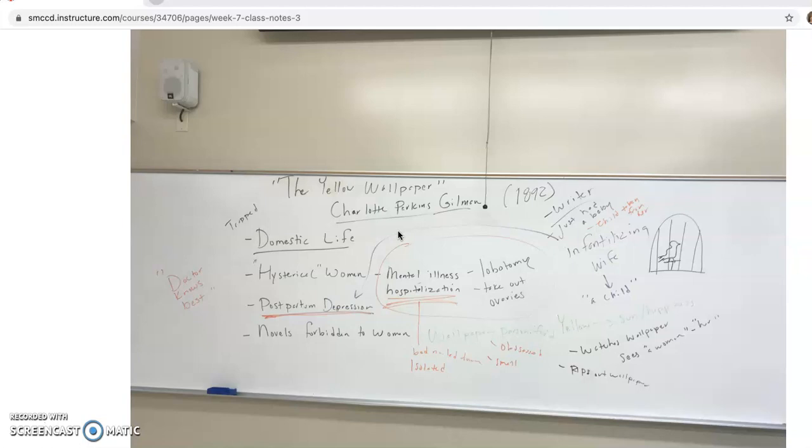So basically we have a main character. It's kind of a wealthy family, as we know the husband is a doctor, and she's got a sister-in-law and a brother and a brother-in-law, and they all kind of try to tell her what's best for her.